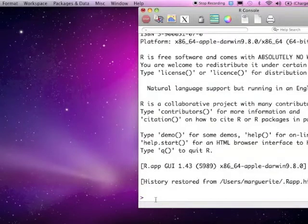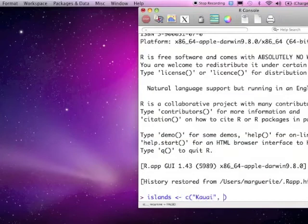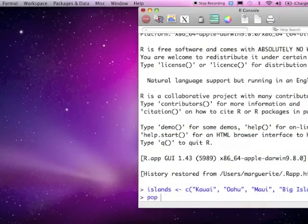So let's do a little demonstration of factors. And for data, we're going to use some Hawaiian islands: Kauai, Oahu, Maui, and the Big Island. And for numeric data, we're going to use population in thousands. So 69, 953, 144, and 185.